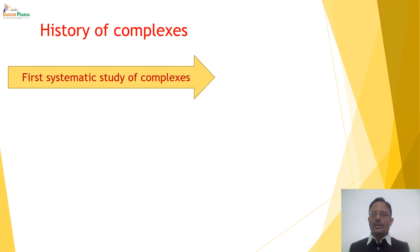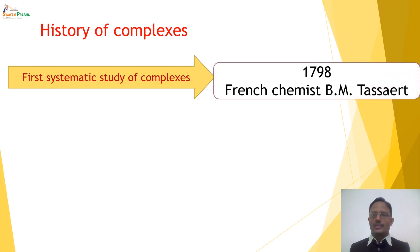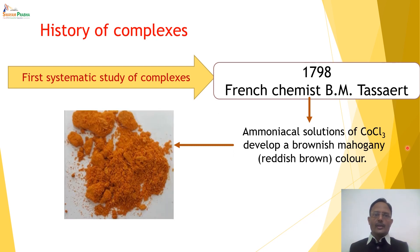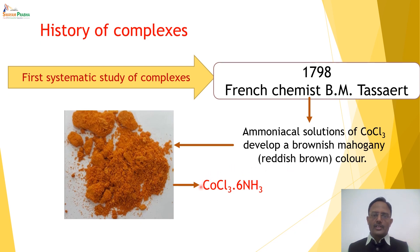The first systematic study on complexes was reported by French chemist B.M. Tassert. In 1798, he was studying the ammoniacal solution of CoCl3. He found that this compound in ammoniacal solution develops a brownish mahogany — reddish brown — colour. This complex was found to have the composition CoCl3·6NH3, and it acted as a basis for Werner's theory.